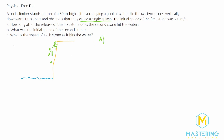Let's write down the variables. Delta Y is 50 meters — we'll set the bottom as Y equals zero, so Y initial is positive 50 meters. The initial velocity is negative 2 meters per second, since it's thrown downward even though we start at a positive Y. We don't know the time, so we'll be solving for that.